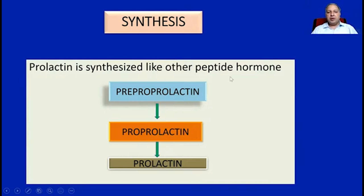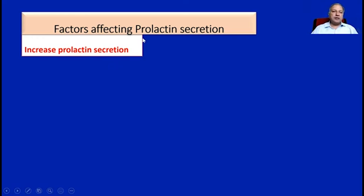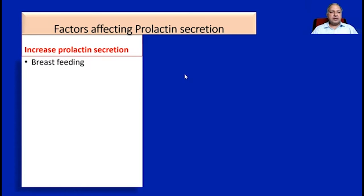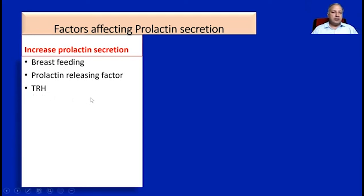Just like any other polypeptide hormone, prolactin is synthesized as pre-pro-prolactin, converted to pro-prolactin, and then ultimately synthesized and released in its mature form. The main factors that increase prolactin secretion are breastfeeding and the prolactin releasing factor released from the hypothalamus, thyroid releasing hormone from the hypothalamus, and other factors like sleep, stress, and angiotensin II.